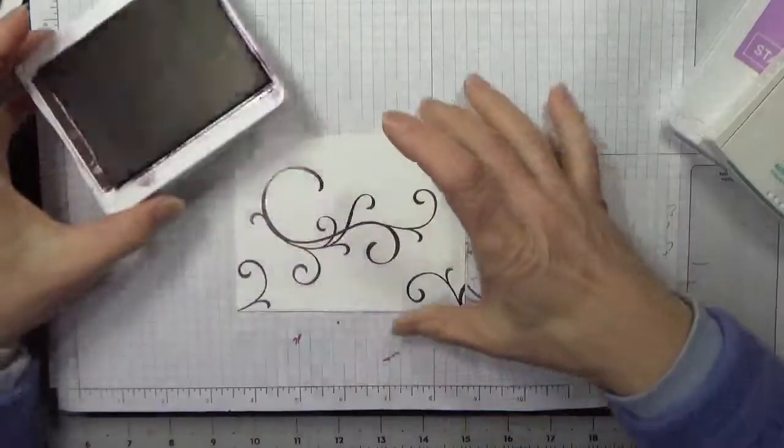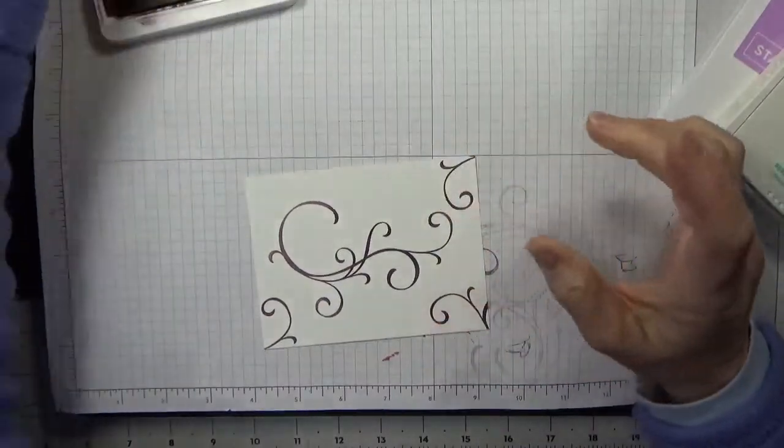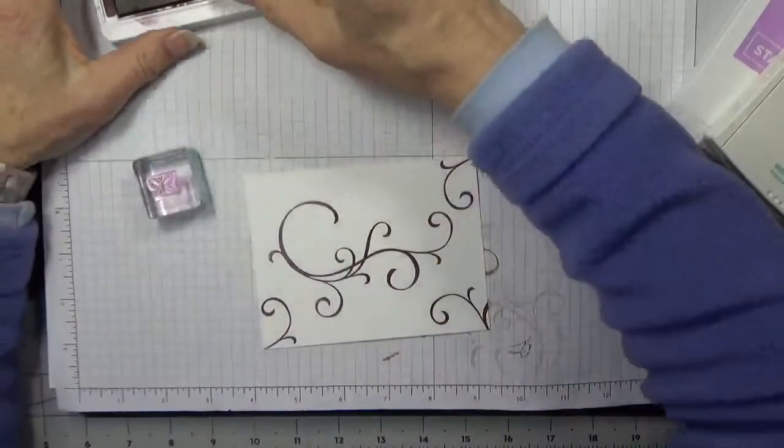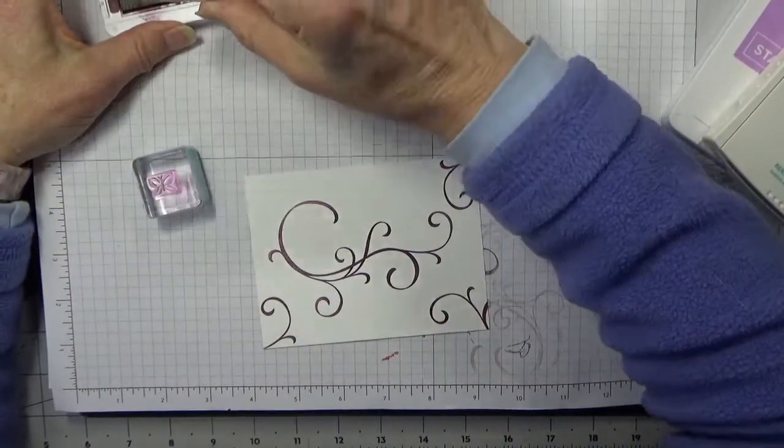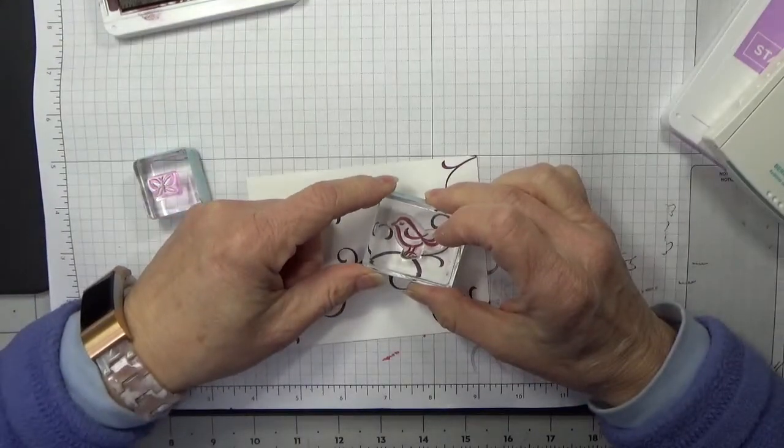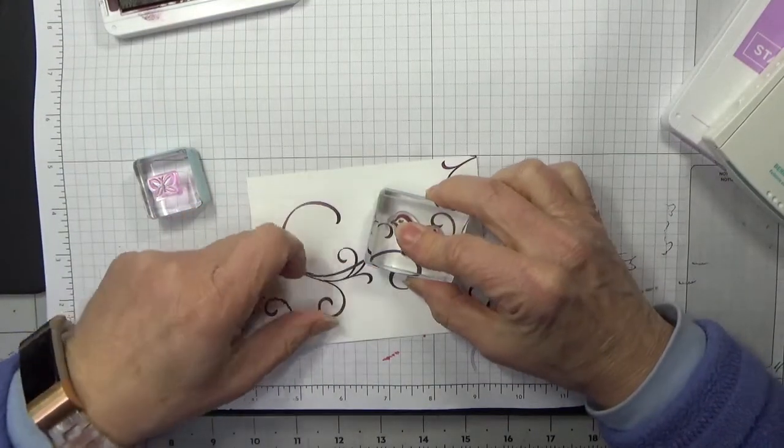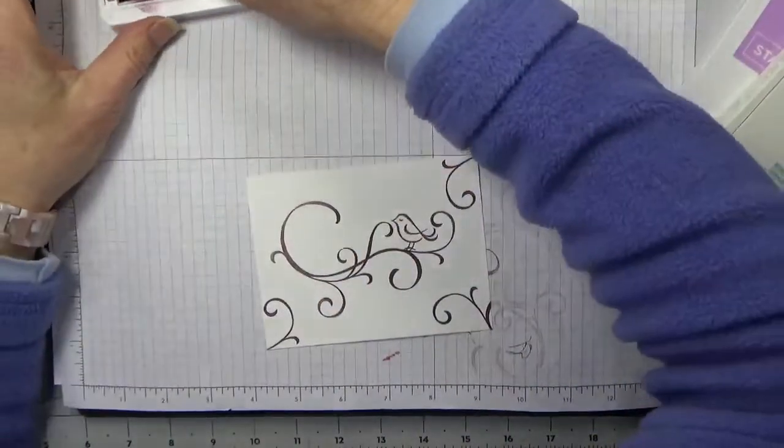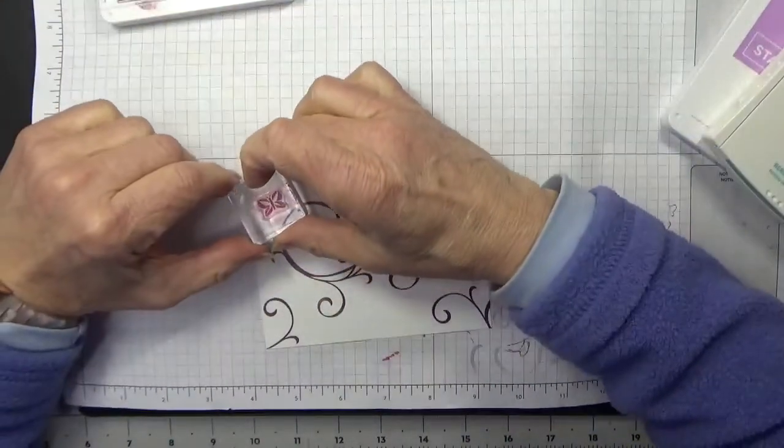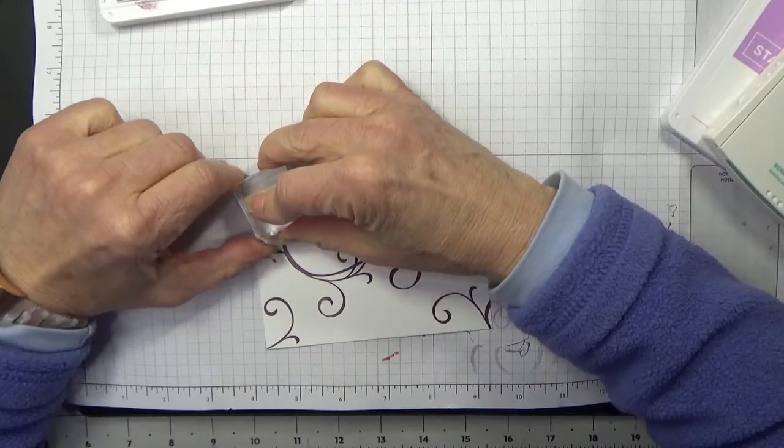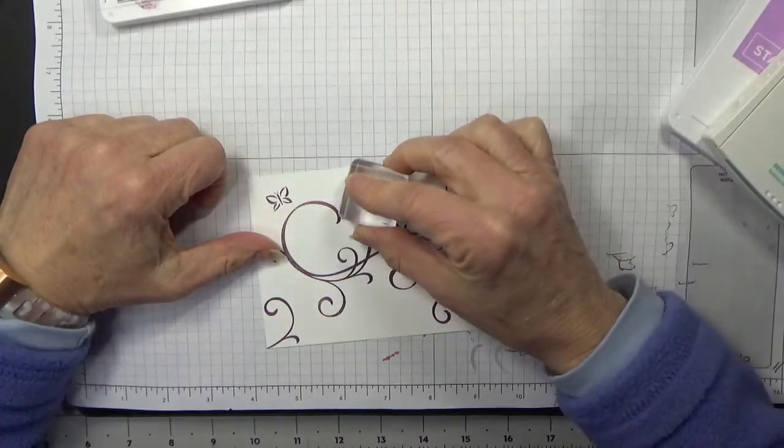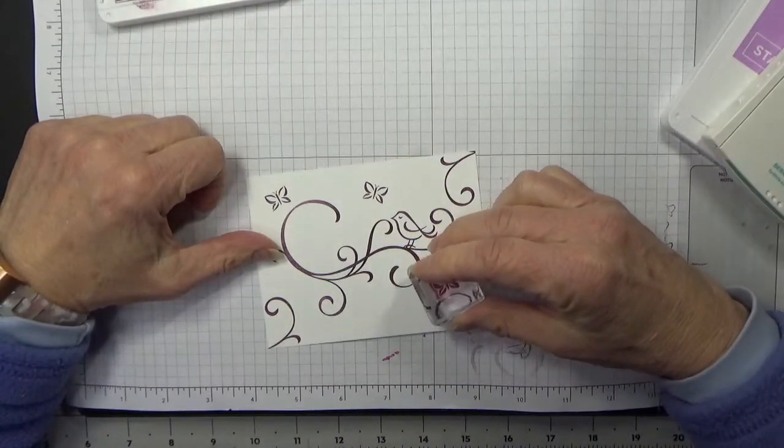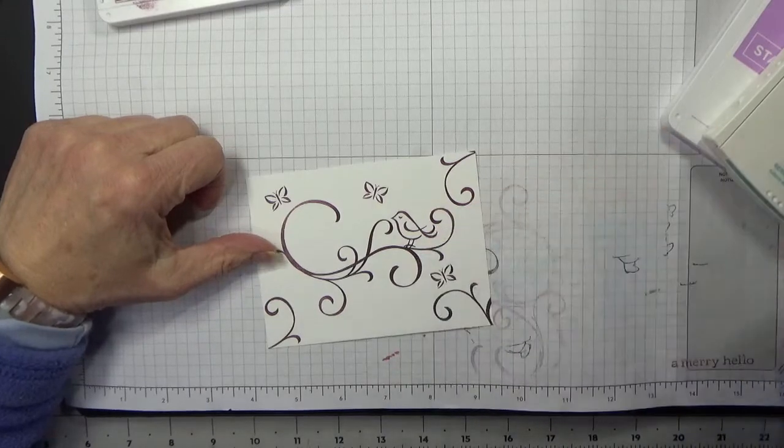The other thing we need to do with our Blackberry Bliss is stamp our bird. He's going to be sitting on our swirl, right there, and then three butterflies. One, two, and the third one will go here.